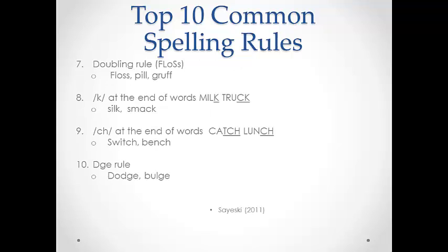The number 7 spelling rule is the doubling rule. I used to call it the FLOSS rule to help students remember that whenever there is only one vowel in a word and it ends in F, L, or S, you must double the last letter. Some examples of this rule are listed. There are a couple of exceptions to this rule that I simply teach as exceptions — for instance, 'bus,' which is actually short for 'omnibus,' and the word 'yes.'